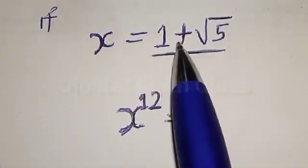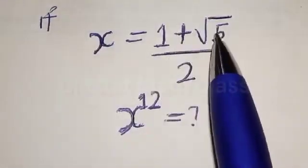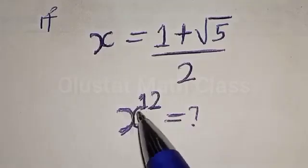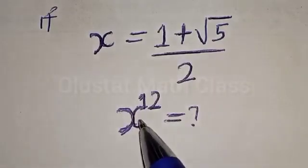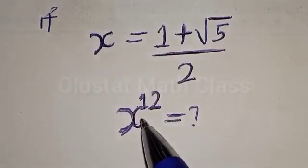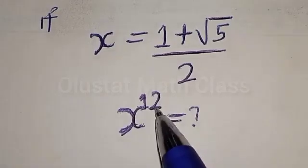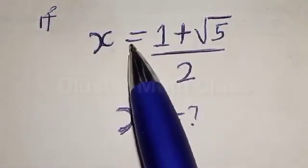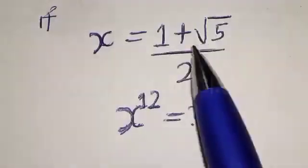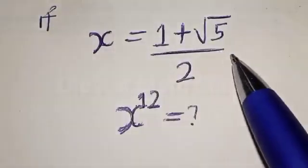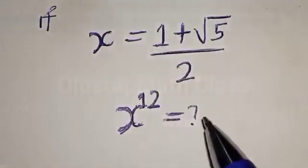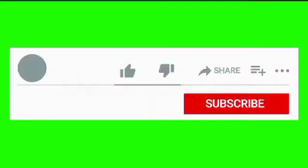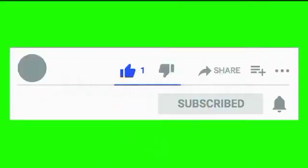If s is equal to 1 plus square root of 5 over 2, what is the value of s raised to power 12? Welcome to today's class. We want to find the value of s raised to power 12 from this given equation: s equals 1 plus square root of 5 over 2. This is the golden ratio. Before we proceed, please don't forget to like, share, comment and subscribe.